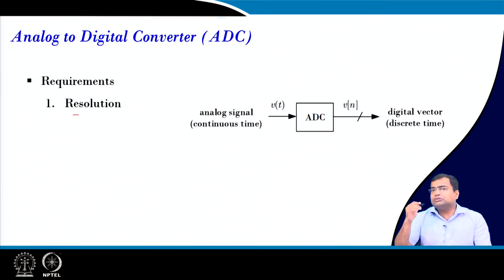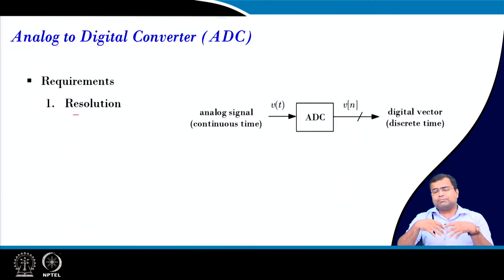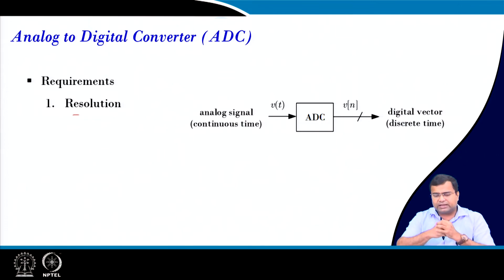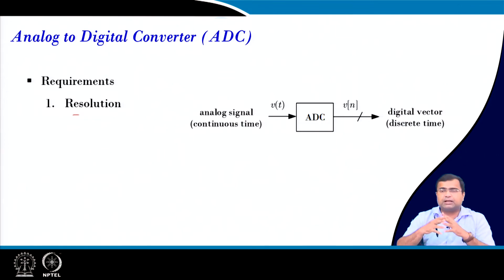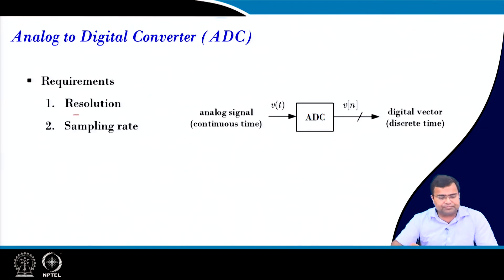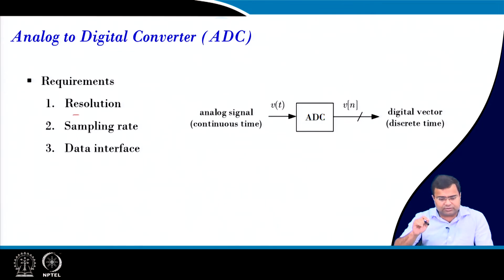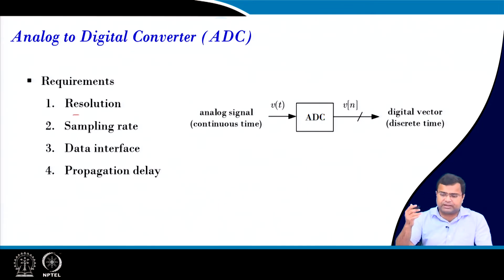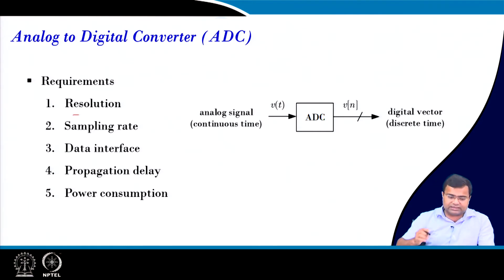Too high a resolution can also cause a penalty — it penalizes in terms of the size of the ADC, their power loss, and the size of the digital controller data. It may also lead to limit cycle oscillation. The sampling rate is important. The data interface — whether 2's complement or offset binary, serial or parallel — propagation delay, and power consumption all matter.